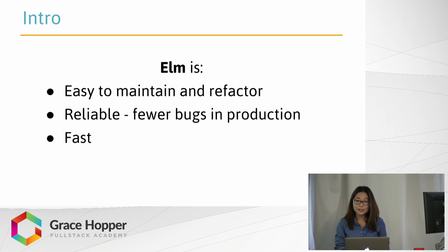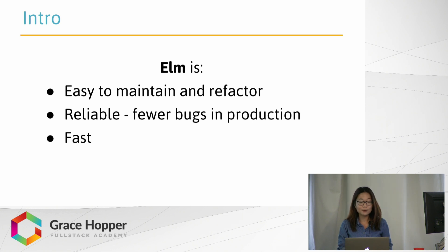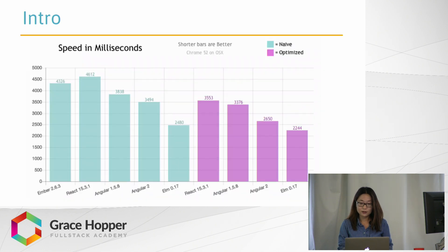Elm seeks to solve these issues by being very easy to maintain, very reliable — meaning fewer bugs in production when you code in Elm — and fast. Here we have a graph comparing the speed of a few different JavaScript frameworks, and it actually shows Elm beating React, Ember, and Angular.